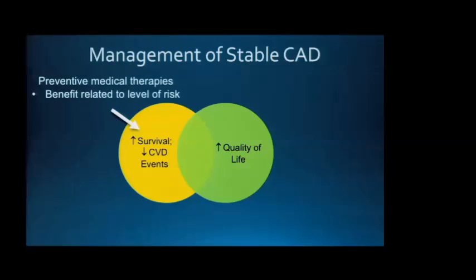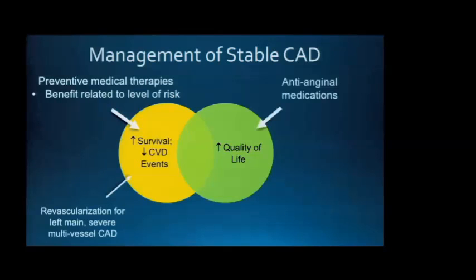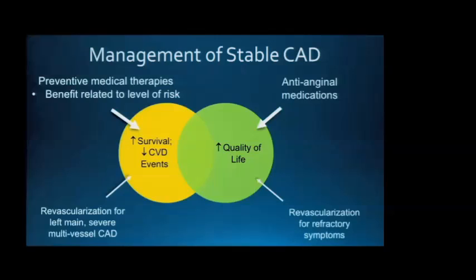Identifying a patient's risk level is important because they may benefit from more intensive therapies. Revascularization is a potential approach for improving survival, but has never been shown to improve survival in the vast majority of patients — there is a role in severe left main and multi-vessel disease, which are the minority. For improving quality of life, the mainstay is anti-anginal medications, and revascularization is typically reserved for patients with refractory symptoms despite medical therapy.